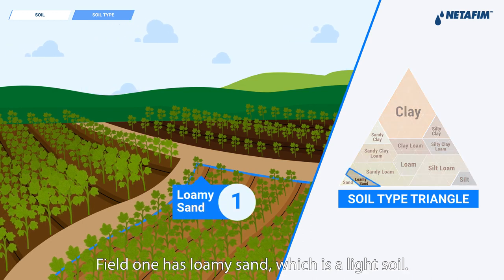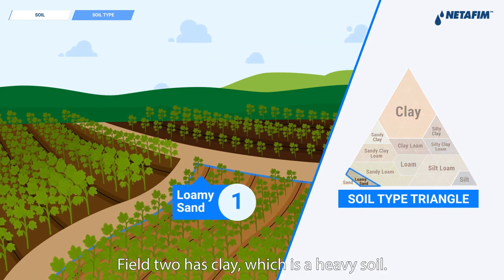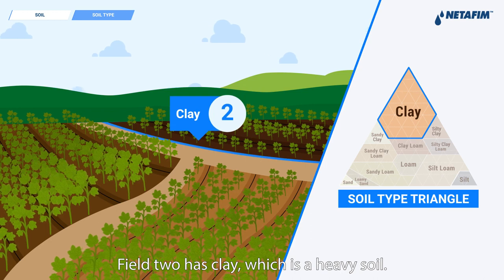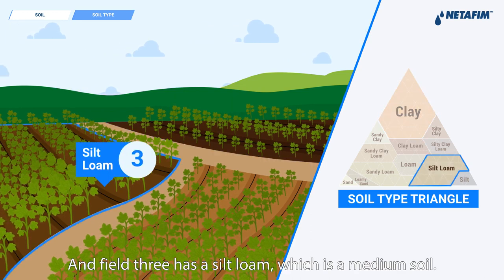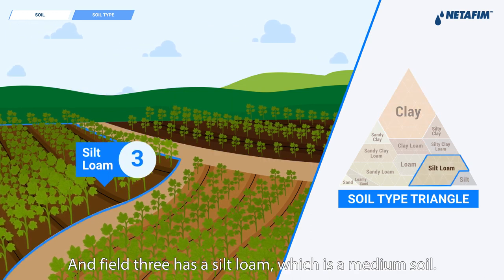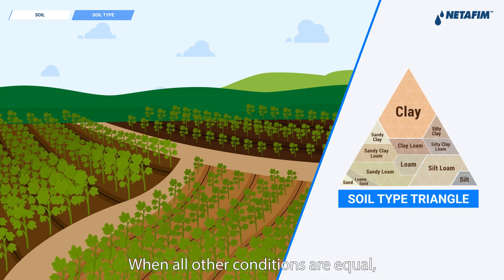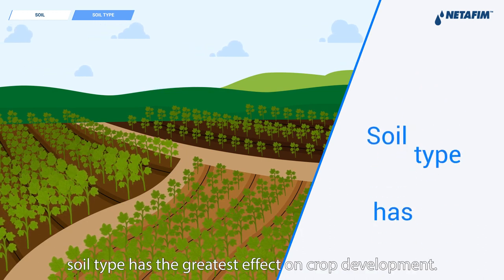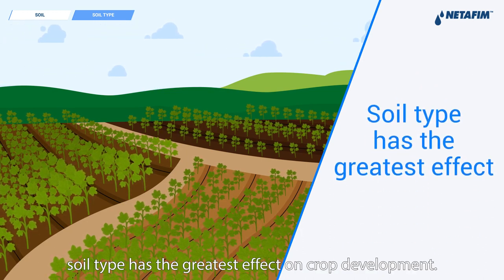Field one has loamy sand, which is a light soil. Field two has clay, which is a heavy soil. And field three has silt loam, which is a medium soil. When all other conditions are equal, soil type has the greatest effect on crop development.